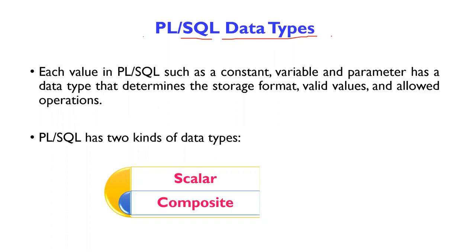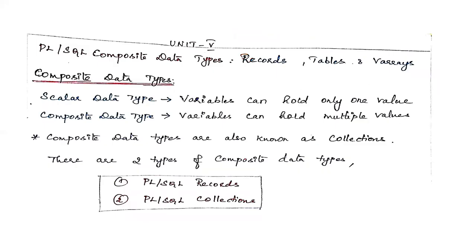Before entering into the composite data type, we will give a revision of PL/SQL data types we have already learned. Each value in PL/SQL — like a constant, variable, or parameter — has a data type associated with it. That data type determines the storage format and what values are allowed. In PL/SQL, you have two kinds of data types: scalar and composite.